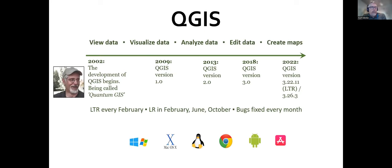QGIS is a desktop GIS software — something you can use to view spatial data, visualize it, symbolize it, analyze data, edit data, and create maps. It was started by Gary Sherman back in 2002. He needed software to view spatial data stored in a database, so he built his own, open sourced it, and called it Quantum GIS. It was officially shortened to QGIS in 2013 with version two. So it's simply QGIS now.